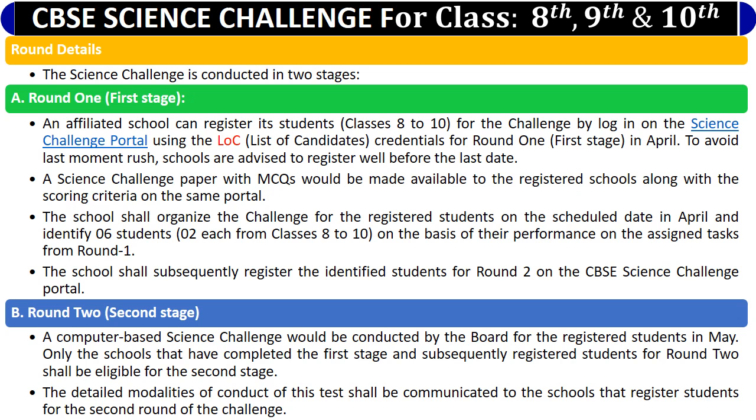The science challenge is conducted in two stages. Round 1: An affiliated school can register its students for the challenge by logging in to the science challenge portal using the LOC credentials for Round 1 in April. To avoid last-moment rush, schools are advised to register well before the last day. A science challenge paper with MCQs would be made available to the registered schools along with the scoring criteria on the same portal.